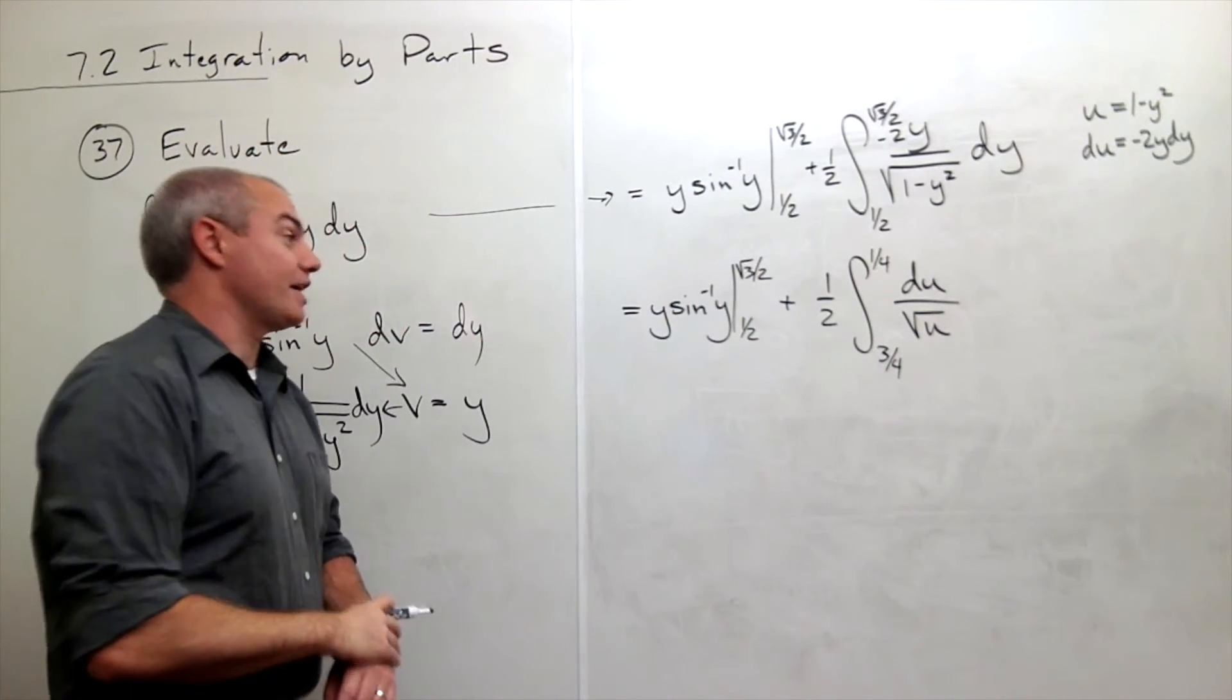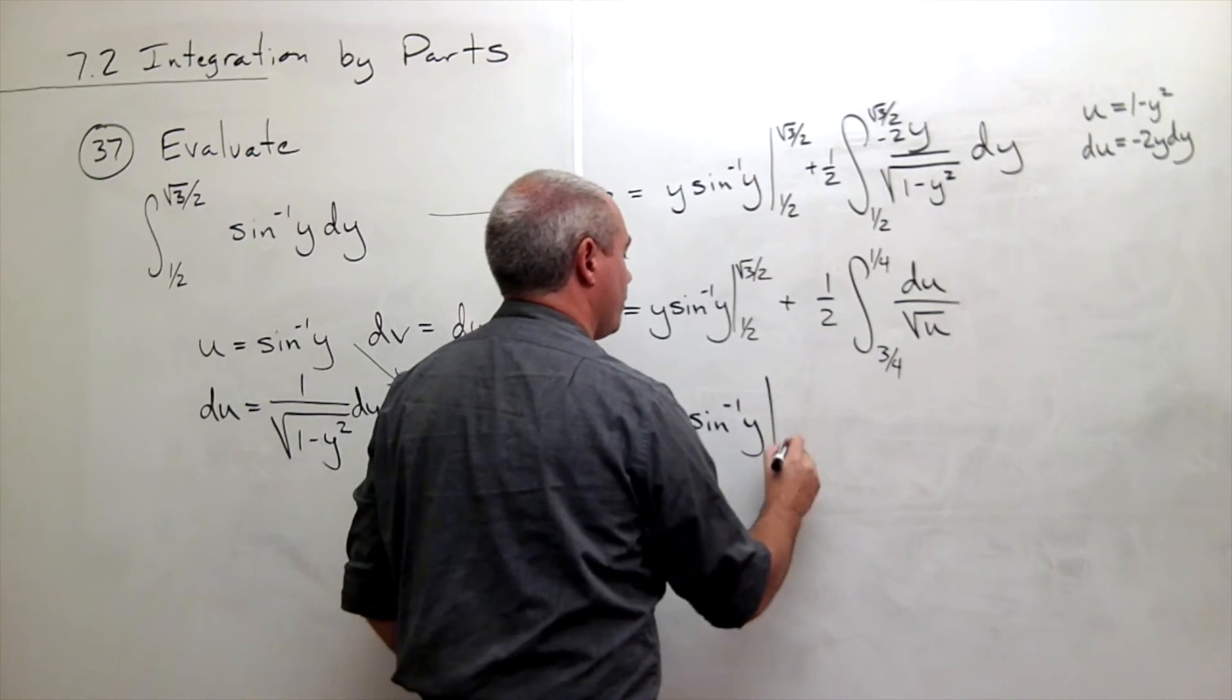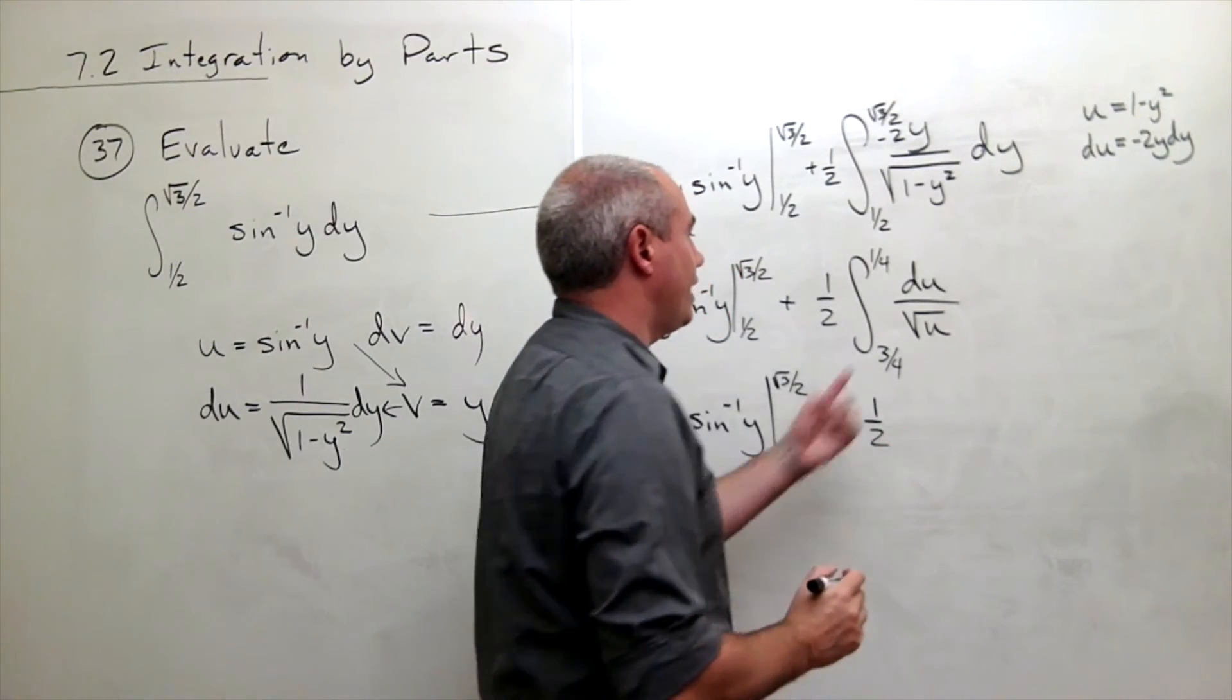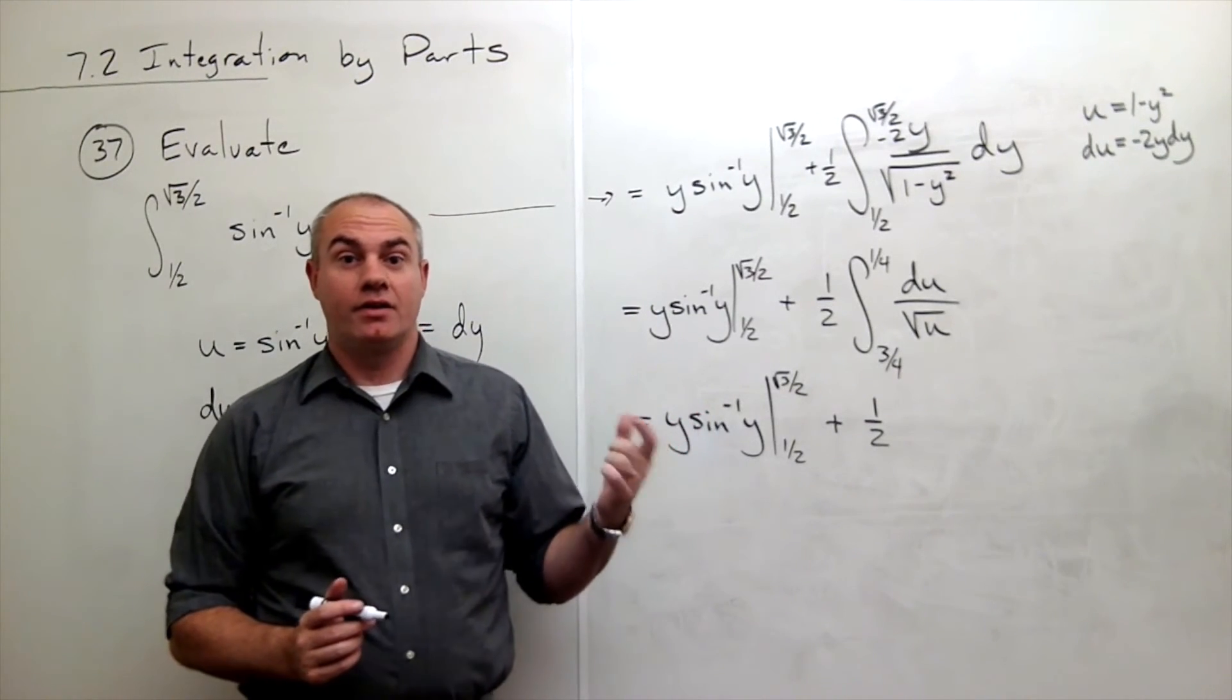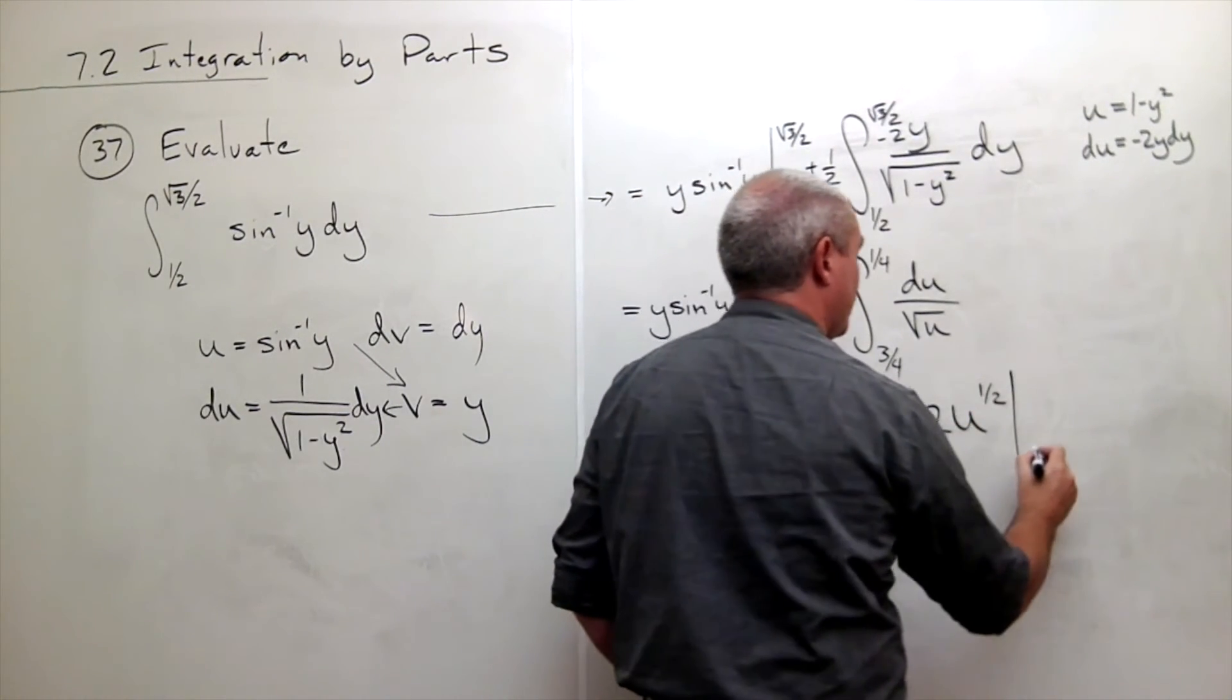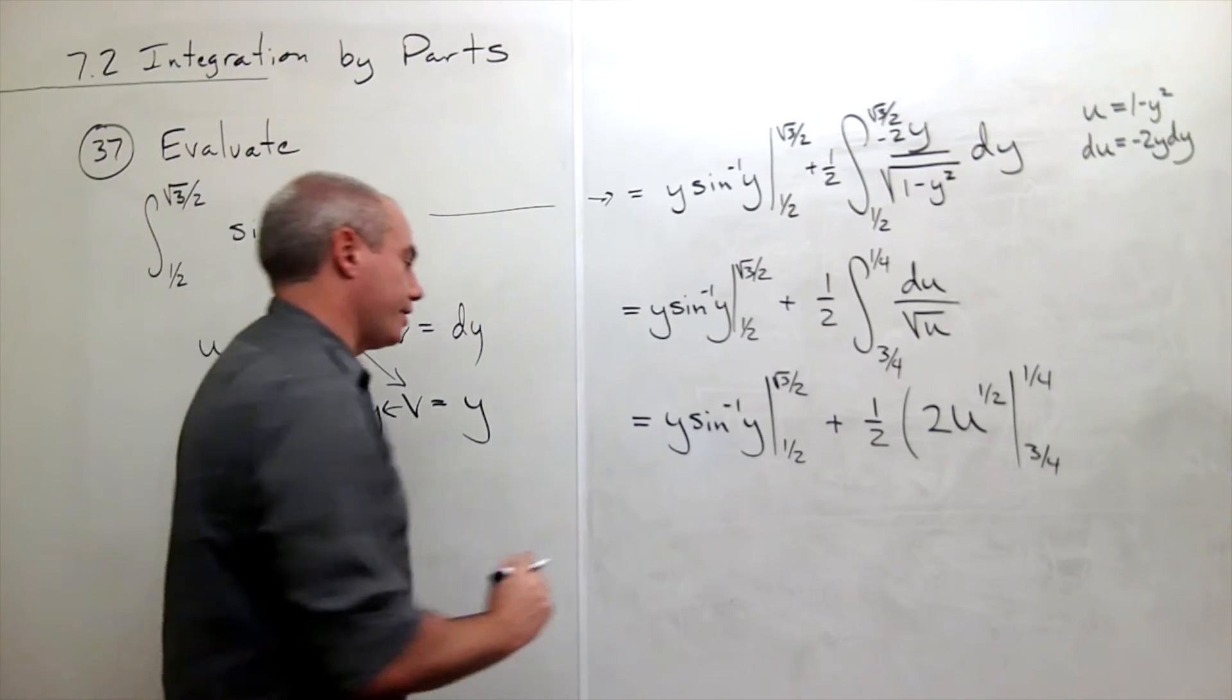Now we need to take an antiderivative and we get y sine inverse y evaluated from 1 half to root 3 over 2 plus 1 half. The antiderivative of u to the negative 1 half is u to the 1 half times 2. So this is going to be u to the 1 half times 2 evaluated from 3 fourths to 1 fourth. And now we're ready to start plugging things in.